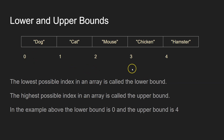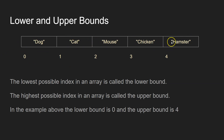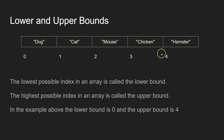In Python, the highest possible bound is always the index of the last element in the list. This array has one, two, three, four, five items. We start counting at zero, so five minus one is four. The lower bound would be zero and the upper bound is four.